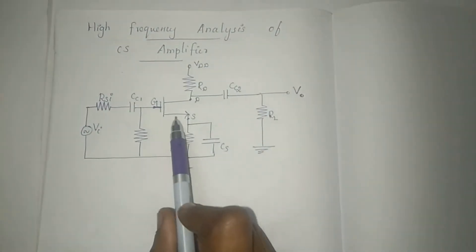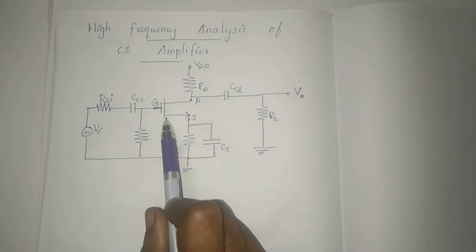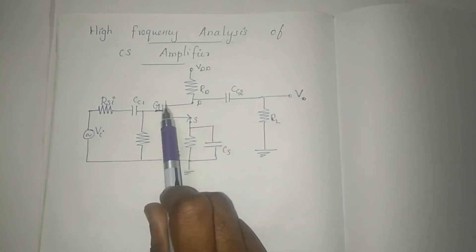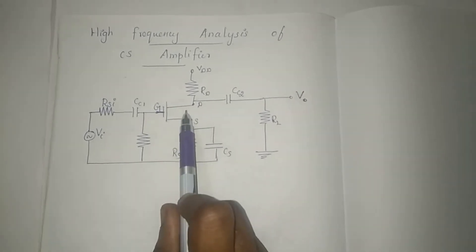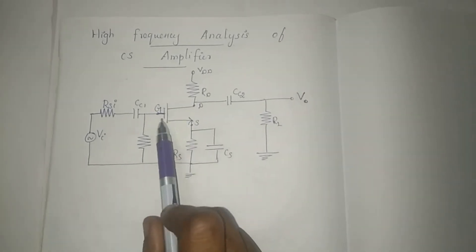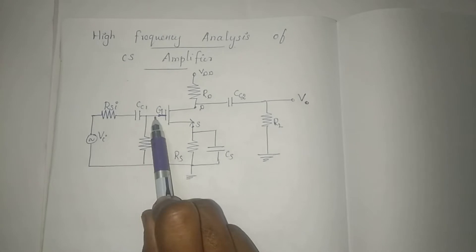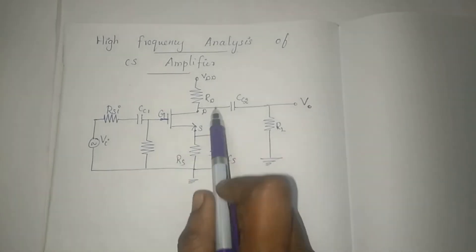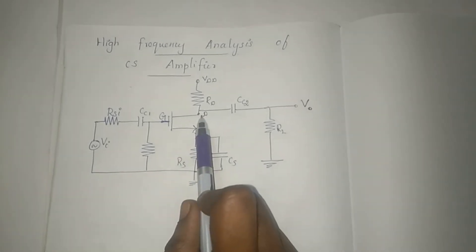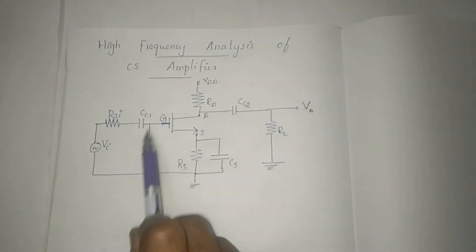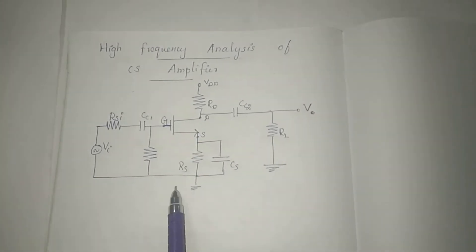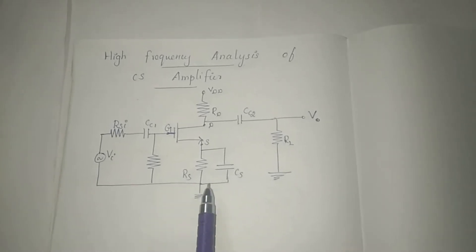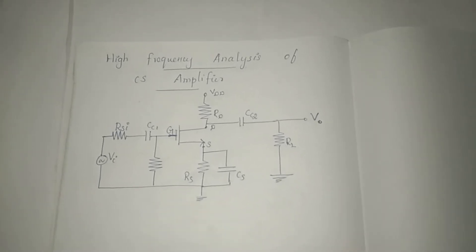We are going to consider the MOSFET circuit diagram. This is the gate, source, and drain. This is the circuit diagram for the common source MOSFET amplifier.